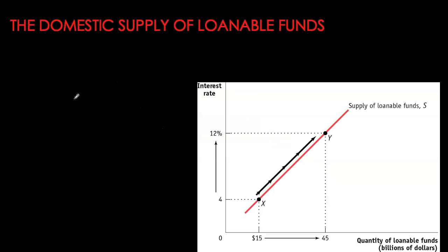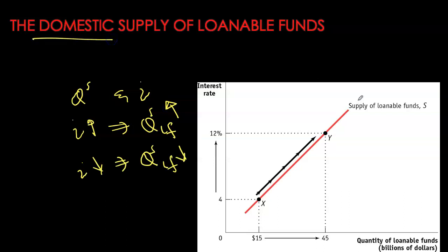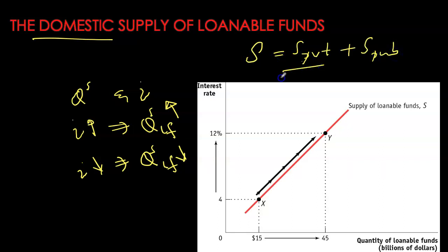The supply of loanable funds gives the relationship between quantity supplied and nominal interest rate. Interest rate for savers or lenders is the benefit they receive in the future. So higher the interest rate, higher is the payoff from lending, and hence quantity supplied of loanable funds is correspondingly higher. Remember that the supply of loanable funds in our domestic market represents supply from both households and government — capturing both private and public savings. It is private savings that largely respond to interest rate movements.